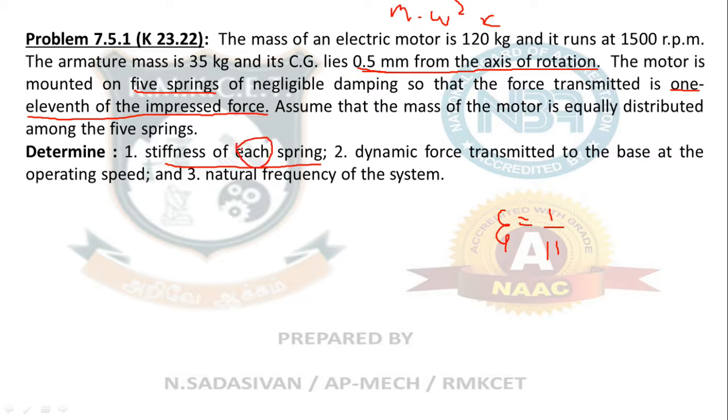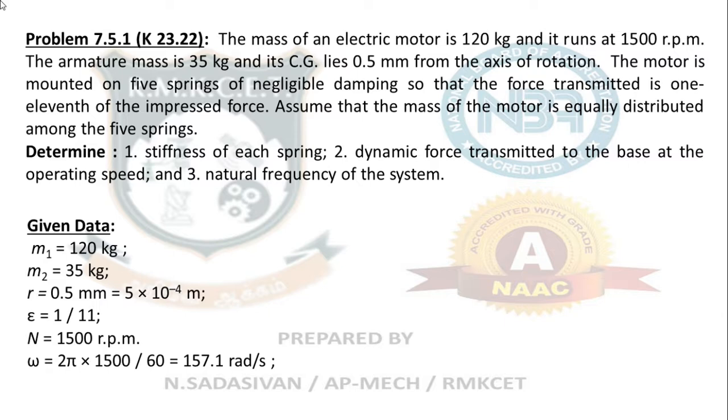Whatever force you apply, one-eleventh is transmitted to the foundation. Assume that the mass of the motor is equally distributed among the five springs. Determine stiffness of each spring, so you have to find the stiffness and divide it by five because you have five springs. Also find dynamic force transmitted to the base at the operating speed and natural frequency of the system.